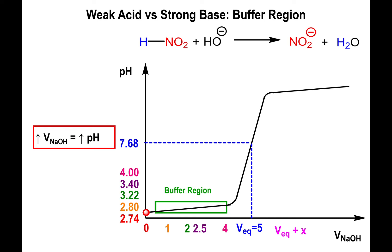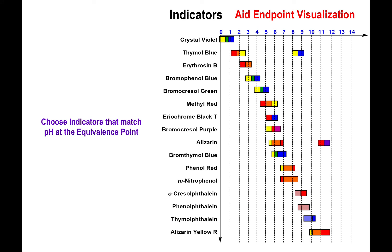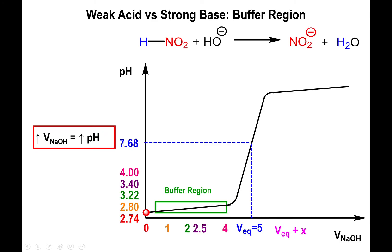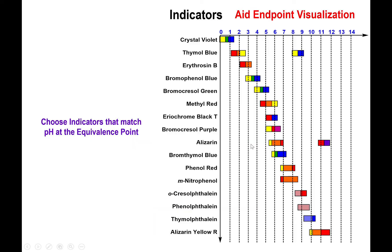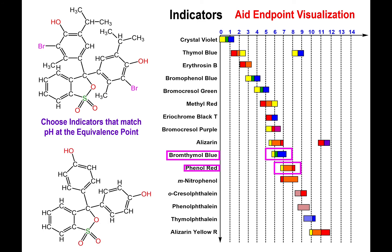In the next lecture I'll show another example to strengthen your understanding of calculating pH at the equivalence point. Regarding indicator selection: the pH at the equivalence point is 7.68, so you want an indicator that changes color near that value. Looking at the table, alizarin could work, bromothymol blue also looks good, and phenol red is a maybe — though its orange-to-red color change may not be a very clear indication.